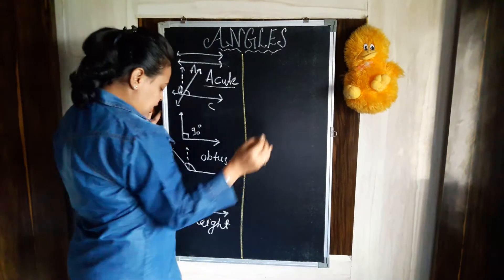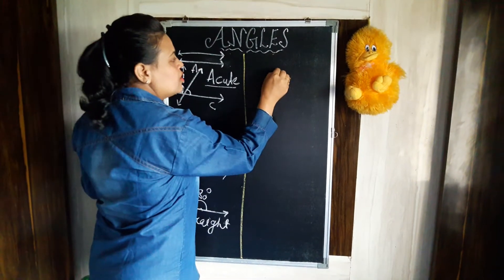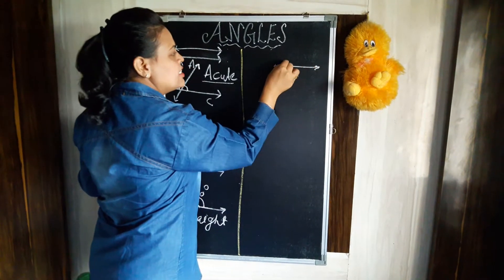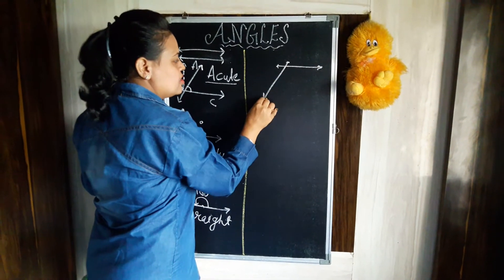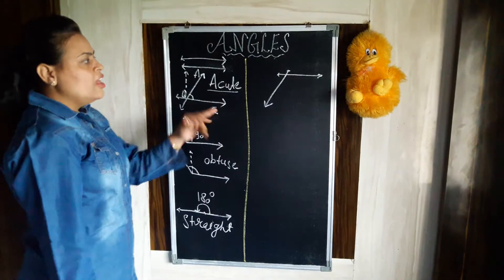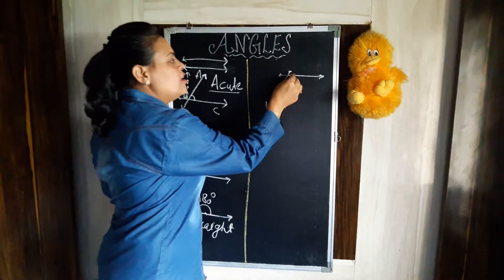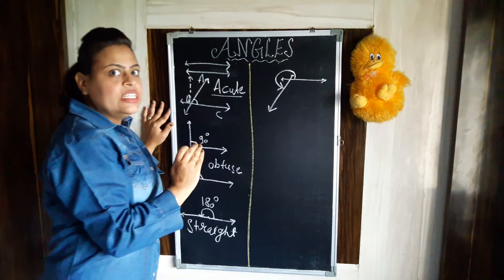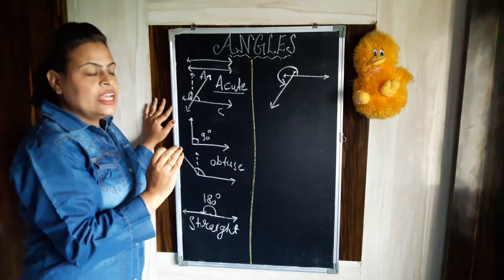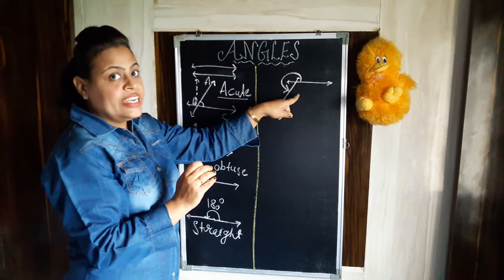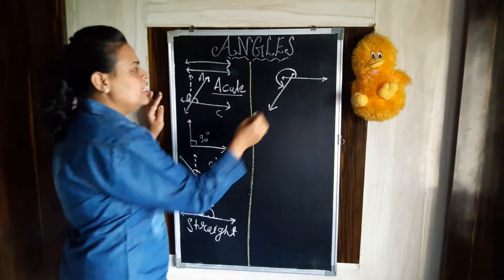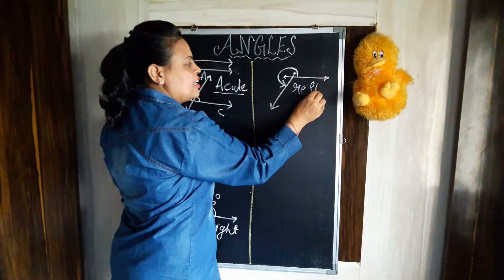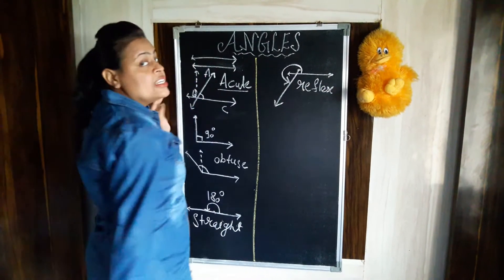Then we have another type of angle. When lines intersect such that the angle is more than 180 degrees but less than 360 degrees, we call it a reflex angle.